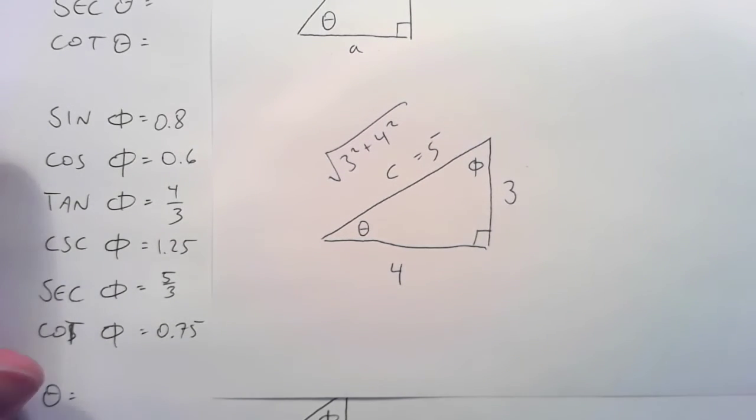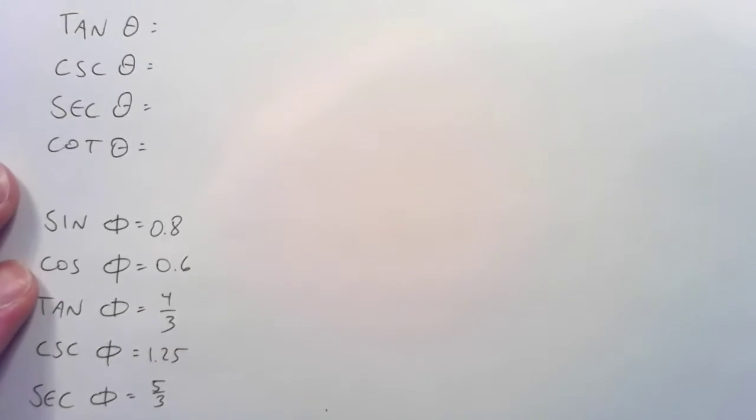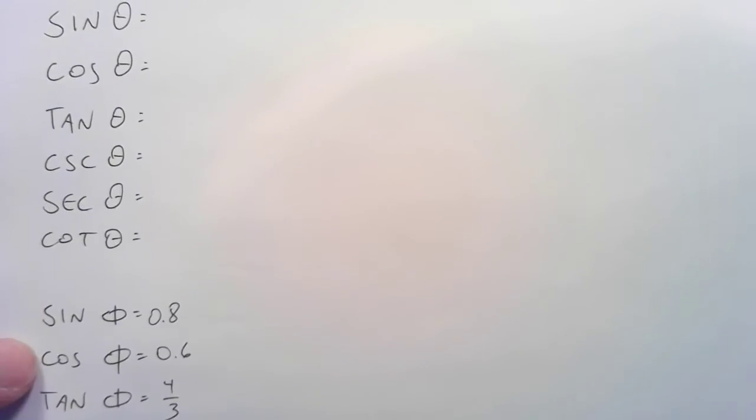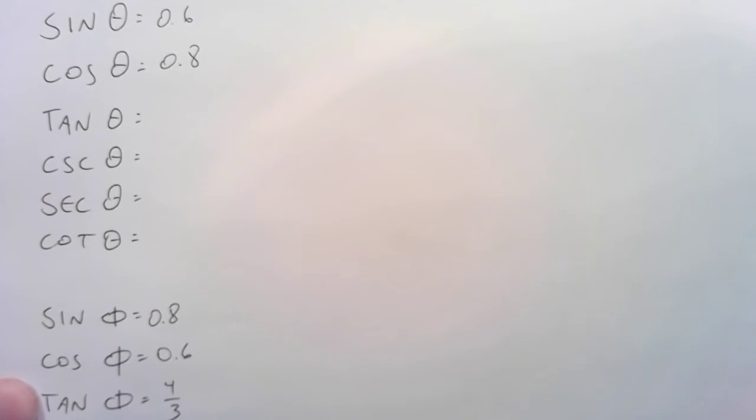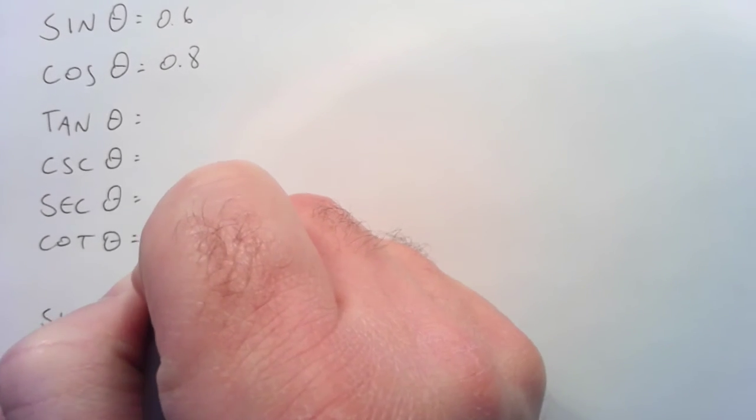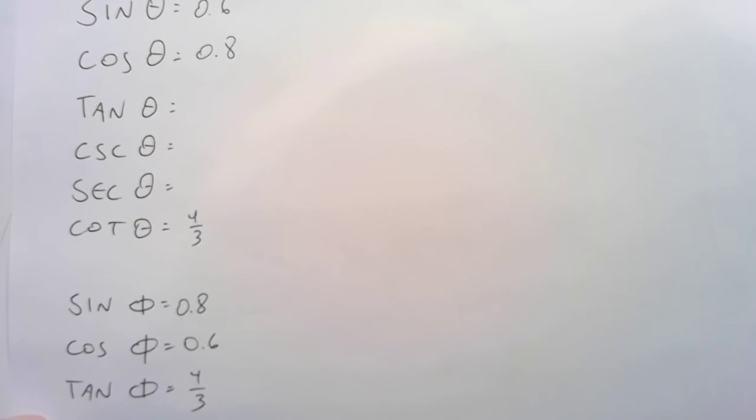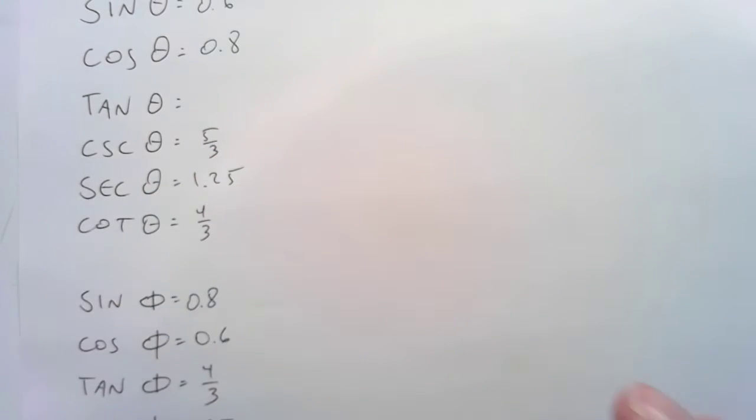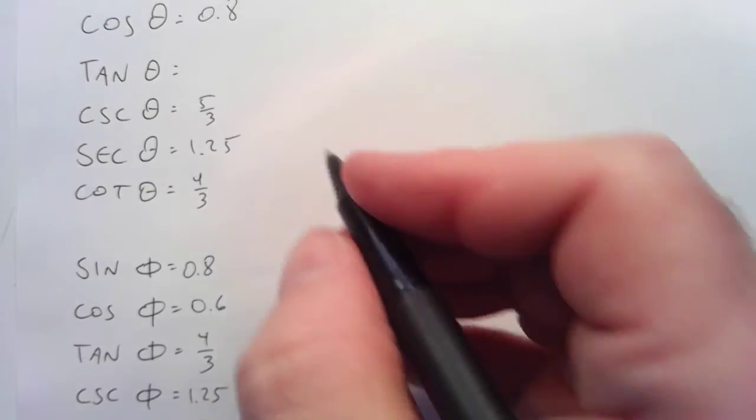Okay. Well, time to switch this up. Let's take the phi values and get theta values out of them. This 0.6 belongs up here now. This 0.8 belongs down here now. This 4/3 actually belongs here. Cosecant, that would be the new secant. So I put 1.25 there. This secant, 5/3, now belongs here at cosecant. And the last value, that 0.75, that 3/4 for cotangent, is now tangent.